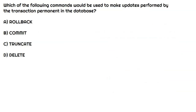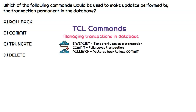This question asks which command would be used to make updates performed by a transaction permanent in the database. When we're talking about making transactions permanent or temporary, we're talking about TCL commands, which manage transactions. The three common TCL commands are savepoint, commit, and rollback. Savepoint temporarily saves a transaction while you're working on it. But when you're done and want to permanently make those changes, that's when you use the commit command — just like committing to a relationship. So the commit command is the correct answer.